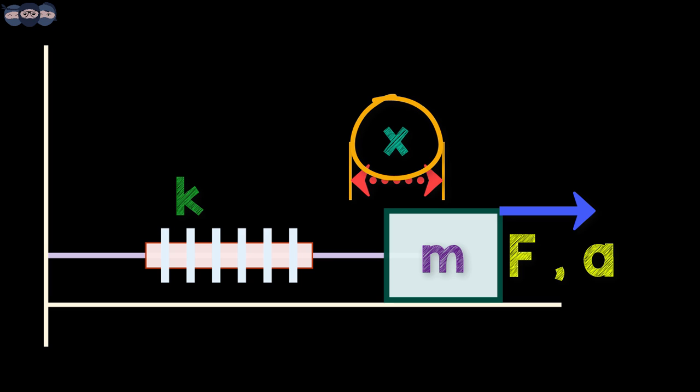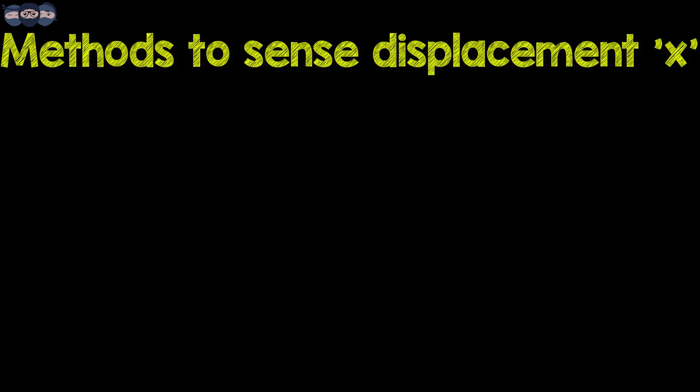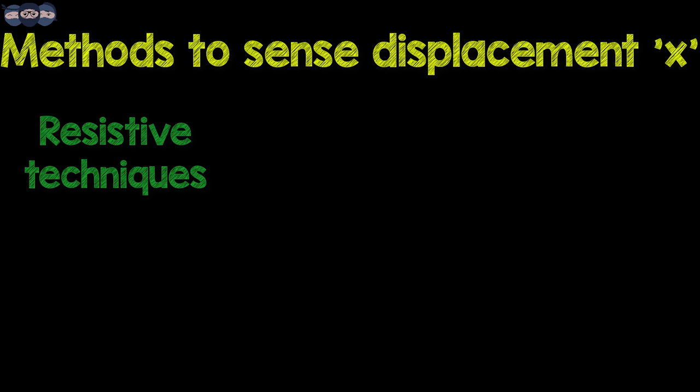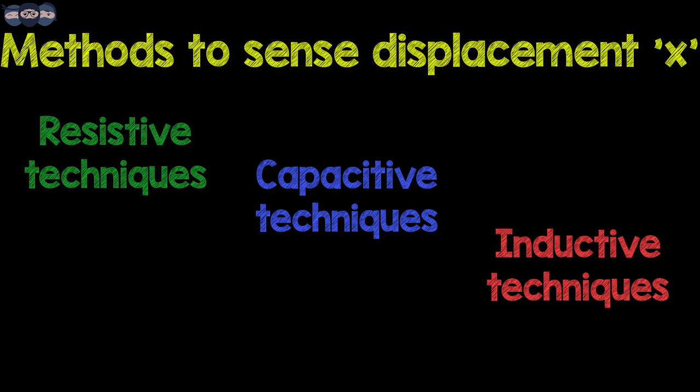If we are somehow able to measure displacement, we can calculate the acceleration on the body. There are different methods to measure the displacement x. These methods use resistive techniques, capacitive techniques or inductive techniques.